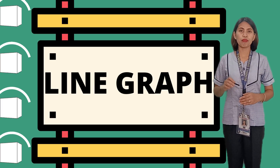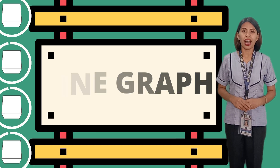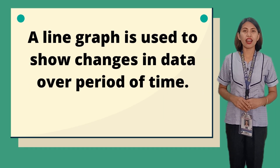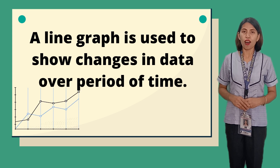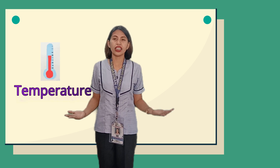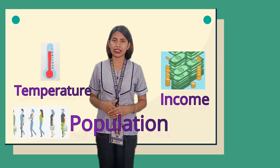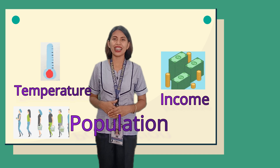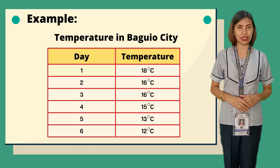Let us now proceed to the next type of presenting data. The third type is a line graph. A line graph is used to show changes in data over a period of time. Data like changes in temperature, income, and population can be represented by a line graph.